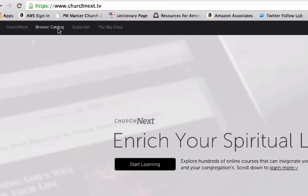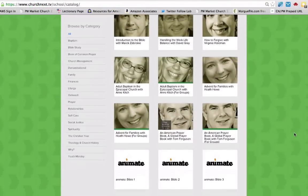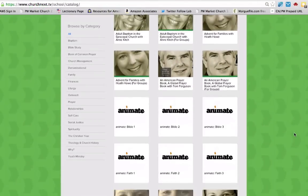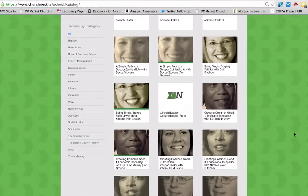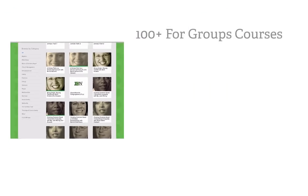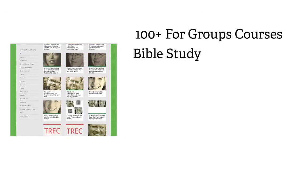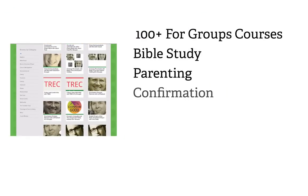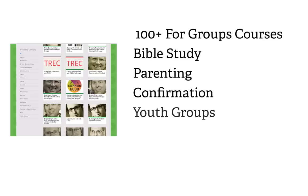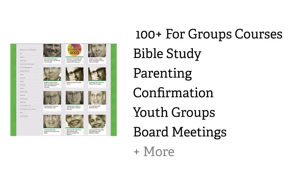To get started, simply go to the library and select a four-groups course you'd like to take. You can choose from more than 100 four-groups courses suitable for Bible study, parenting, confirmation, youth groups, church board meetings, and more.